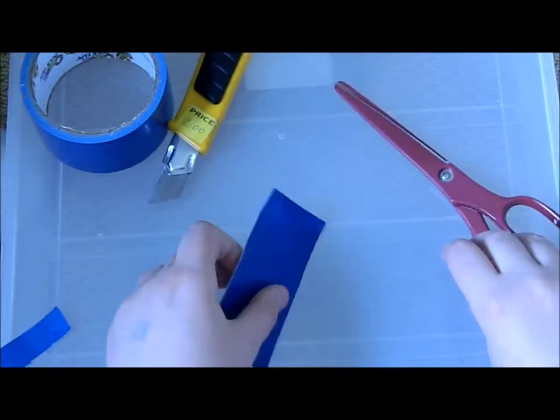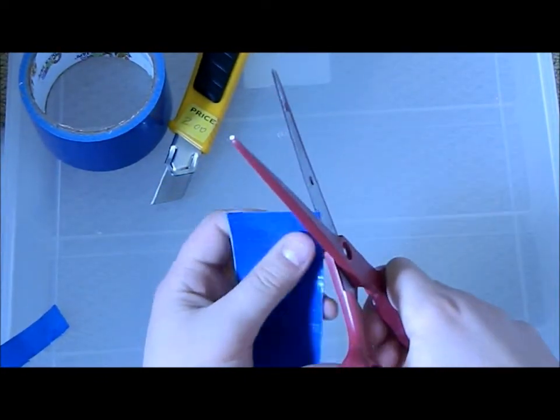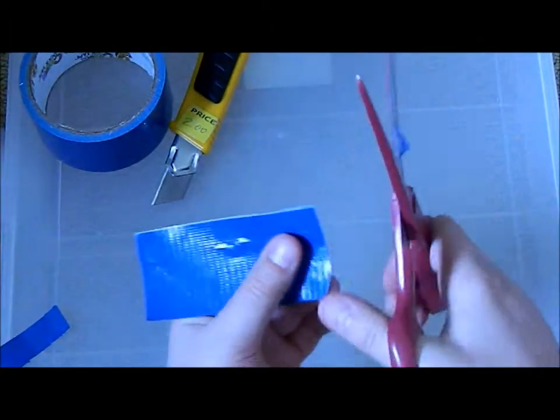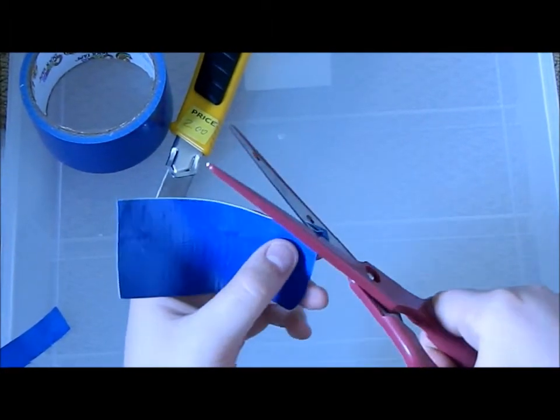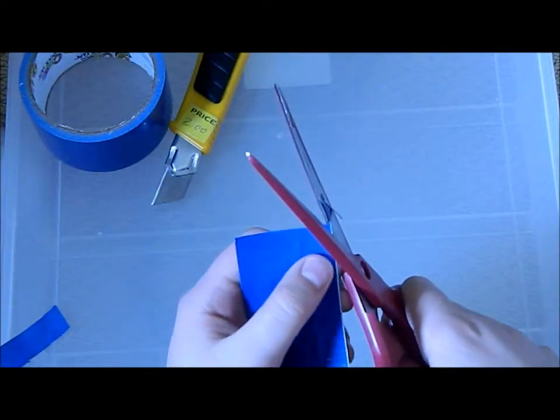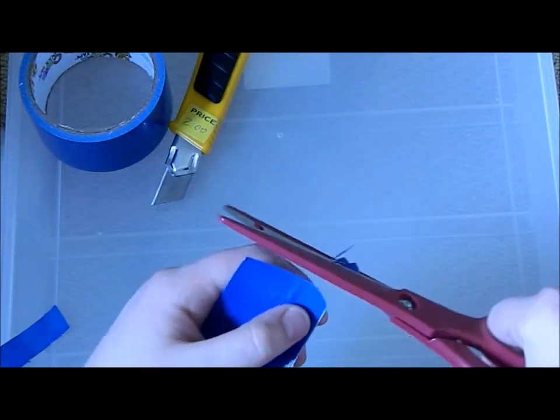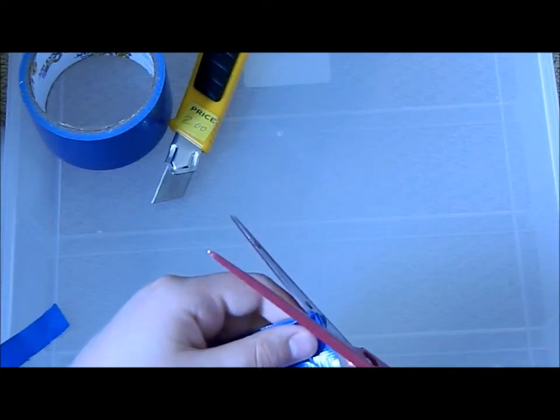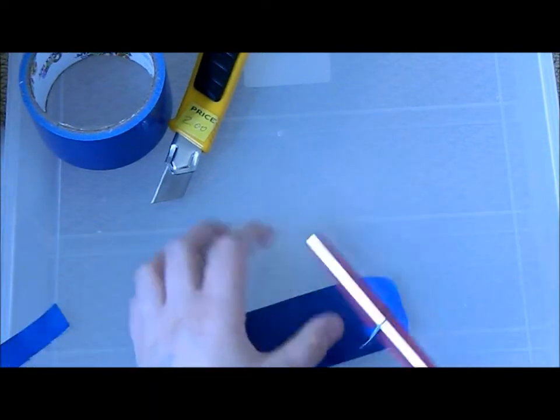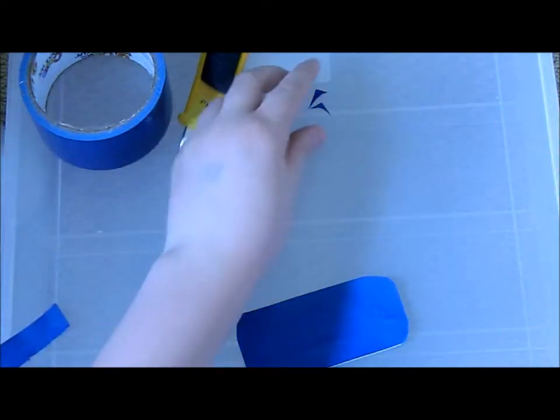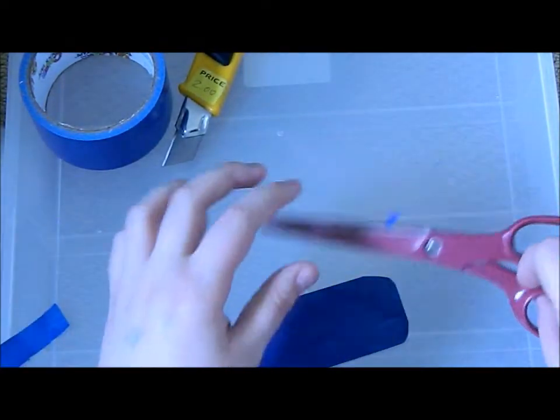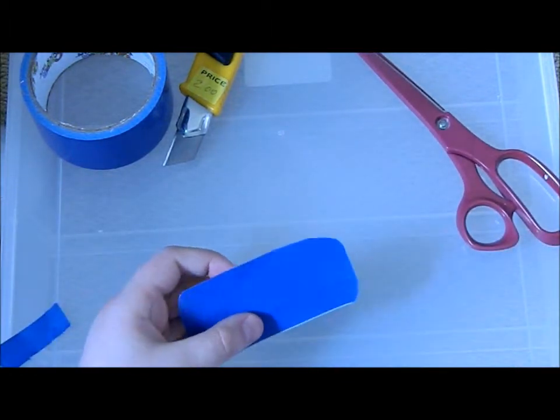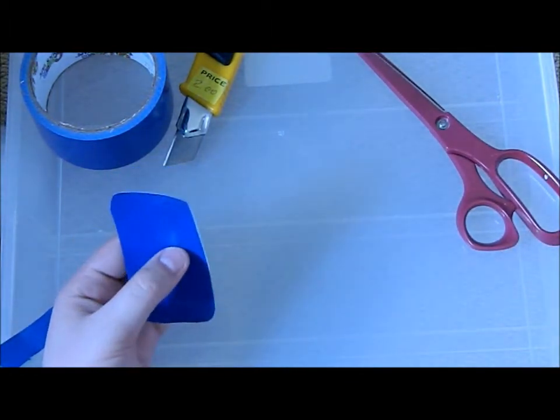I'm going to put the scissors on and around the corner of this. So now you fold the corners of your piece of duct tape.